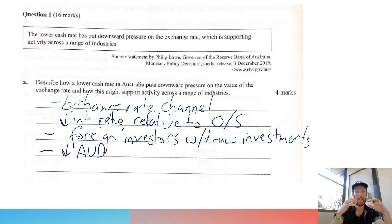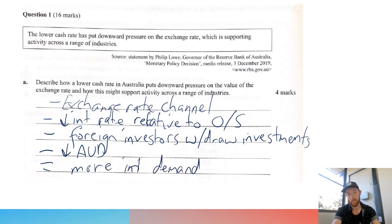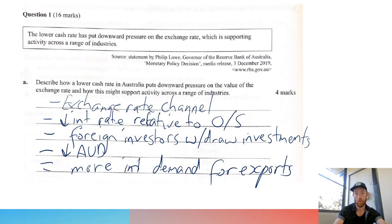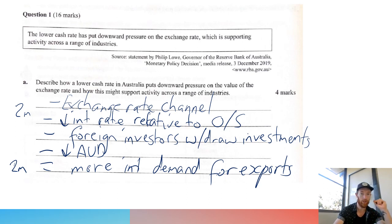This puts downward pressure on the Australian dollar. Then for how this might support activity across a range of industries — when the Australian dollar is lower, there is an increased demand for our exports because they're cheaper by comparison. That means across industries like agriculture, mining, etc., our exports are cheaper, therefore there's going to be more international demand for them. I think they're going to want at least some examples of industries — say China wanting our iron ore, or greater demand for our barley exports, or how a lower Australian dollar makes tourism more attractive. I think you're probably going to get two marks from the exchange rate channel description and two marks from that final bit about supporting various industries.